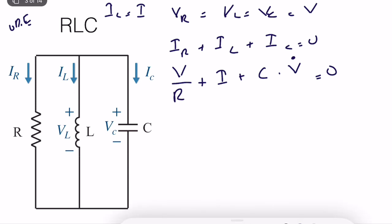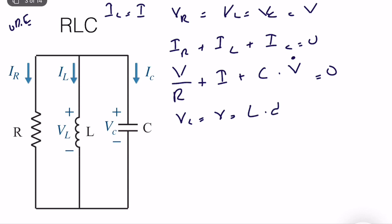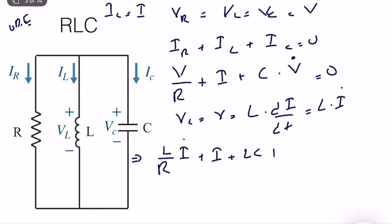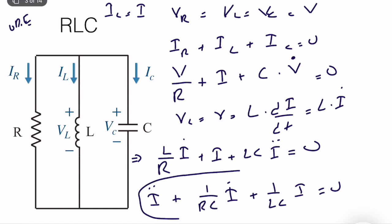We don't want V — we want I. So we need to replace V with expressions in I. We know that VL equals V, and it equals L times dI/dt, which is L times I-dot. Substituting and organizing, we get: L/R · I-dot + I + LC · I-double-dot equals zero.